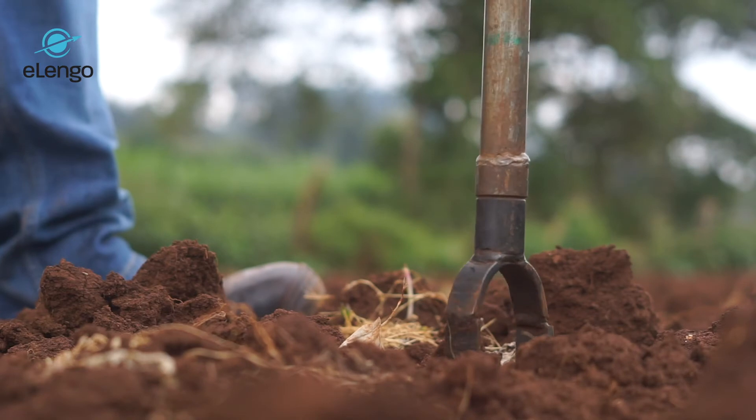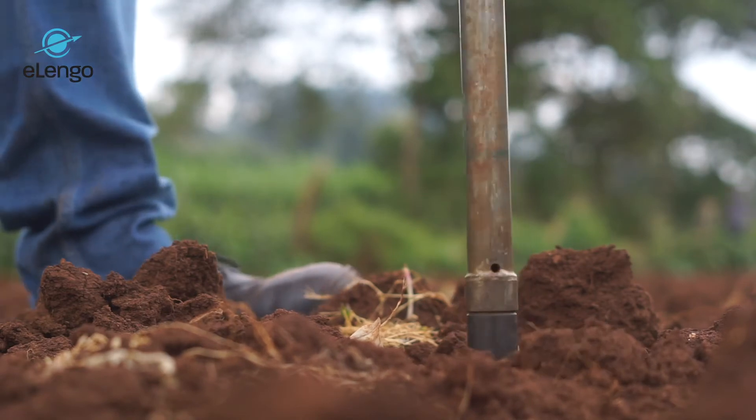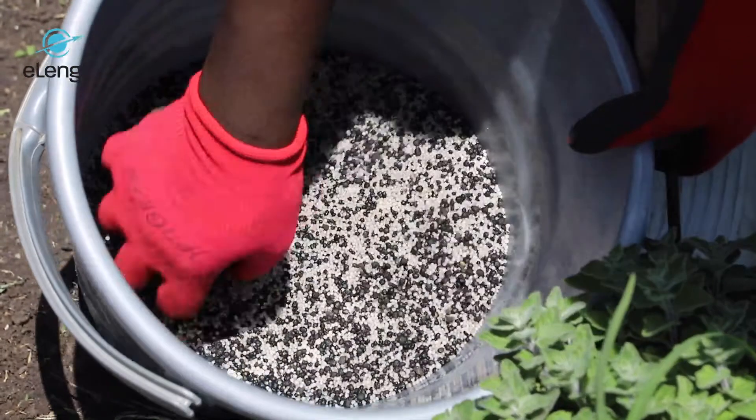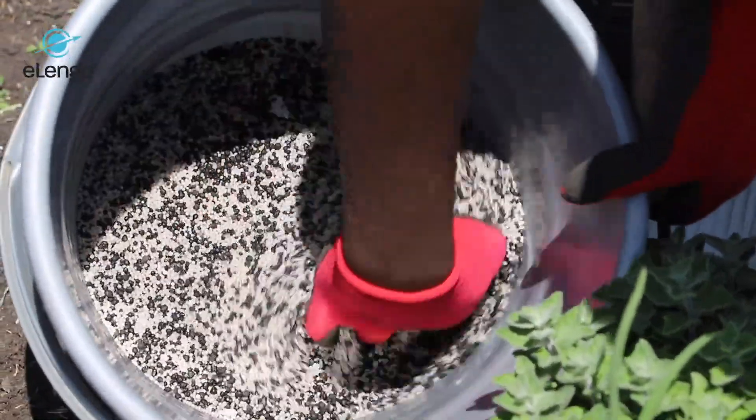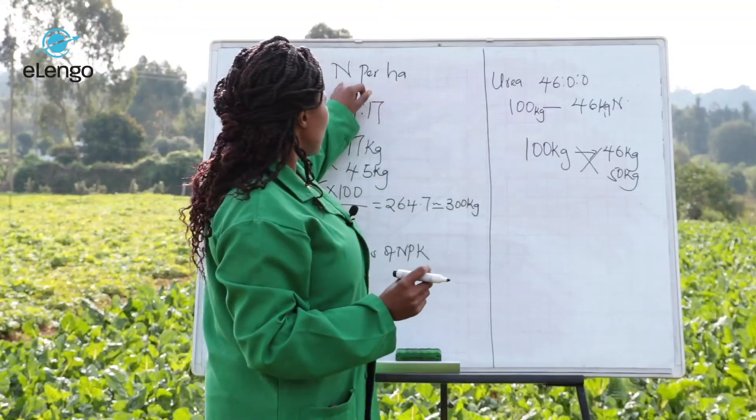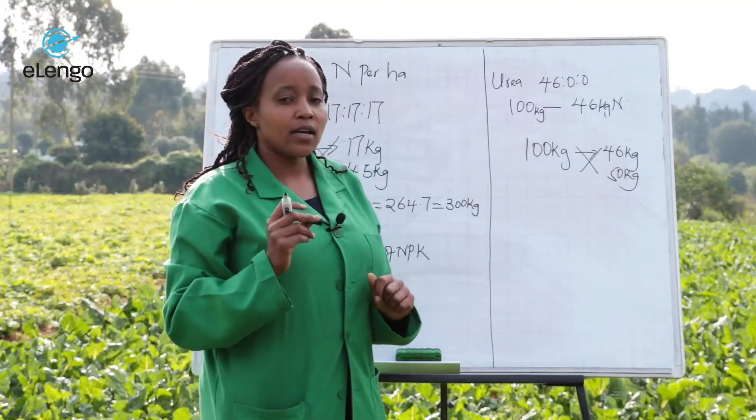Specifically, we are going to look at soil sampling — how do we sample the soil, and how do you do the analysis in the lab? When looking at fertilizer, we are going to look at fertilizer types, which fertilizer you can use for which crop that you grow, and some calculations — for example, if you want to use a fertilizer on a certain hectare, what are the calculations? We are also going to look at the types of fertilizers.